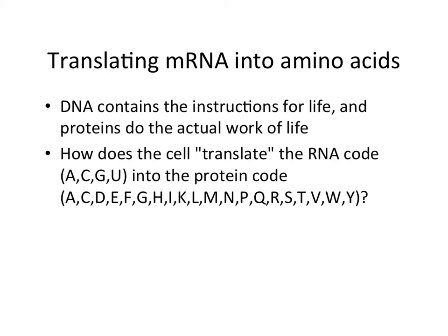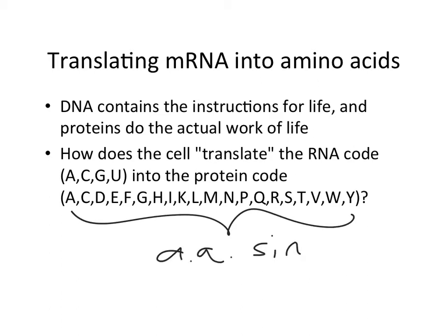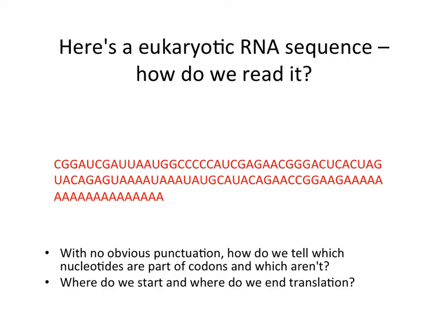The single letter codes for the amino acids: A, C, D, E, F, G... You do not have to memorize these, obviously. You'll always be able to look them up if you want. We're going from four nucleotides to 20 amino acids. How does this work?